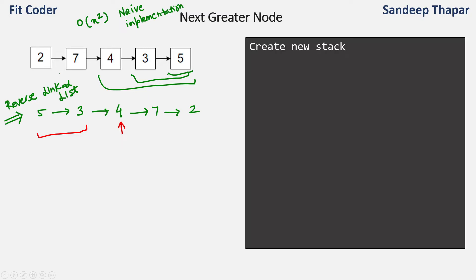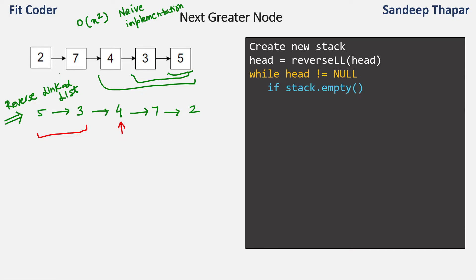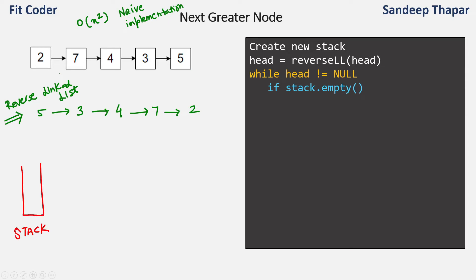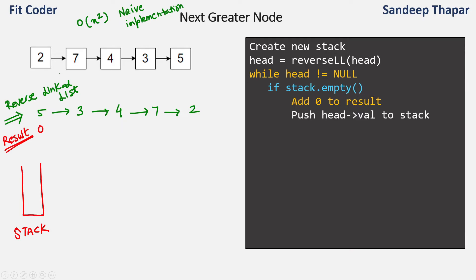Let's go step by step. First we create a new stack and reverse the linked list. Then we start traversal from the head. We check if the stack is empty — since it is, this is the first element. We add 0 to the result, meaning there is no greater element. So for 5, we add 0 to the result array. Then we push the head value 5 onto the stack and move head to point to the next node, which is 3.